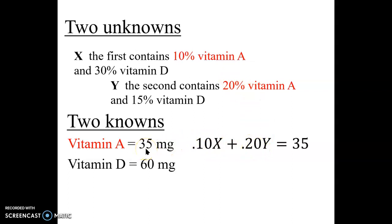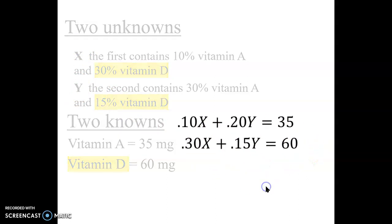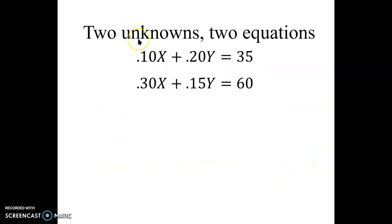And we add them together, we should get that 35 milligrams. Just looking at vitamin D, 30% of the X and 15% of the Y should give us the 60 milligrams. We don't know how much X and Y need to be, but we do have an equation. Actually, we have two equations with two unknowns.